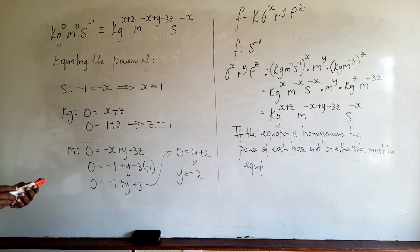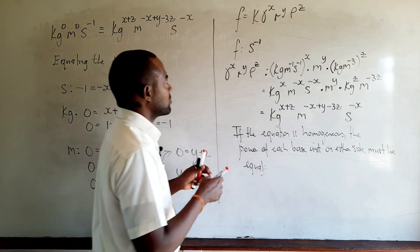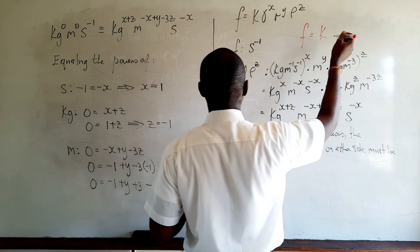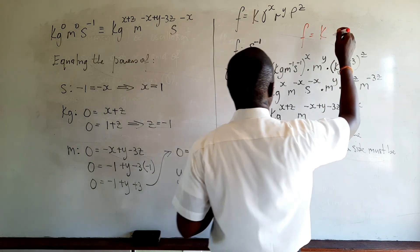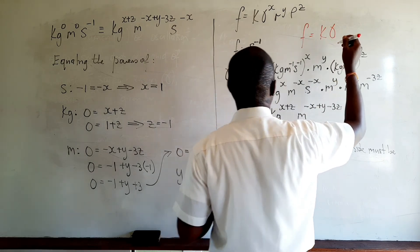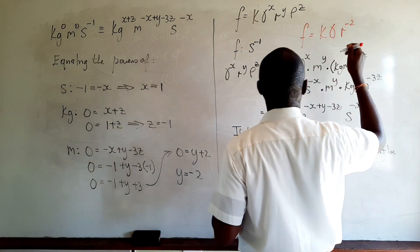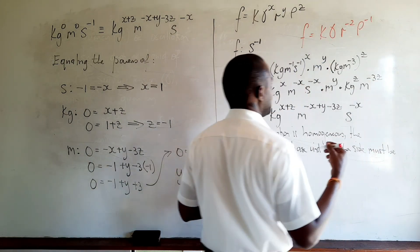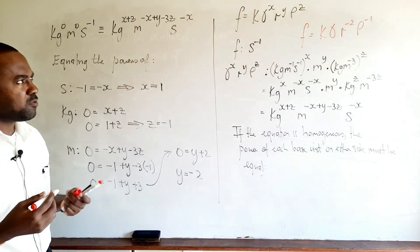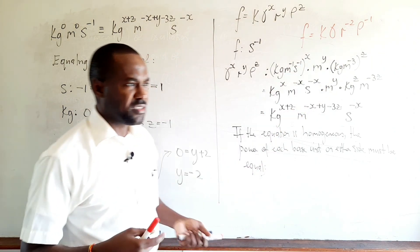So there we have it. We found the unknowns x, y, and z by assuming the equation was homogeneous, expressing each variable in terms of its base units, arranging the base units to give a single power, and equating the powers of each base unit on either side. The value of x is one, z is minus one, and y is minus two. Therefore the equation is: f equals k gamma r to the power of minus two, rho to the power of minus one. Note that this method of homogeneity does not allow us to find the value of the dimensionless constant k.